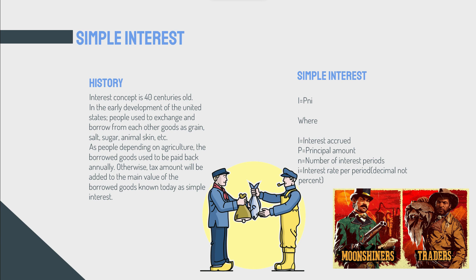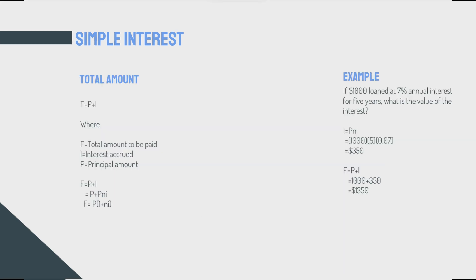So the equation for the simple interest: I would equal P multiplied by I. Small letter I - I mean capital I is the interest accrued, P would be the principal amount, n is the number of interest periods, and small i is the interest rate per period. What does that mean? Letters are letters until you make sense out of them, and equations are boring unless you can use them in your real life. If $1,000 is loaned at 7% annual interest for five years, what's the value of the interest? You need to know which is which. $1,000 is what? Which letter? That's P. And this one? No, this one - that's the small i. For five years, that would be your n.